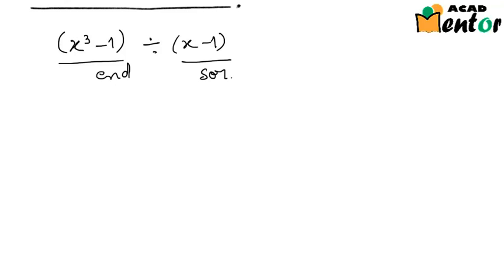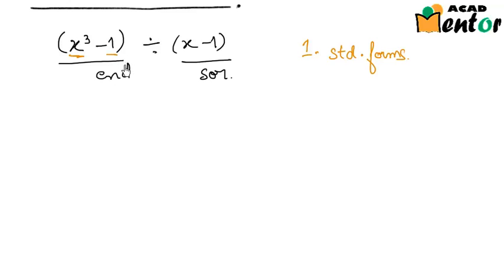The first step was to check whether both the polynomials are in their standard forms or not. x cubed minus 1 — the highest power of x is on the leftmost, followed by decreasing powers, so the dividend is in its standard form. Now the divisor x minus 1: x is the leftmost and has the highest exponent, so x minus 1 is also in its standard form.